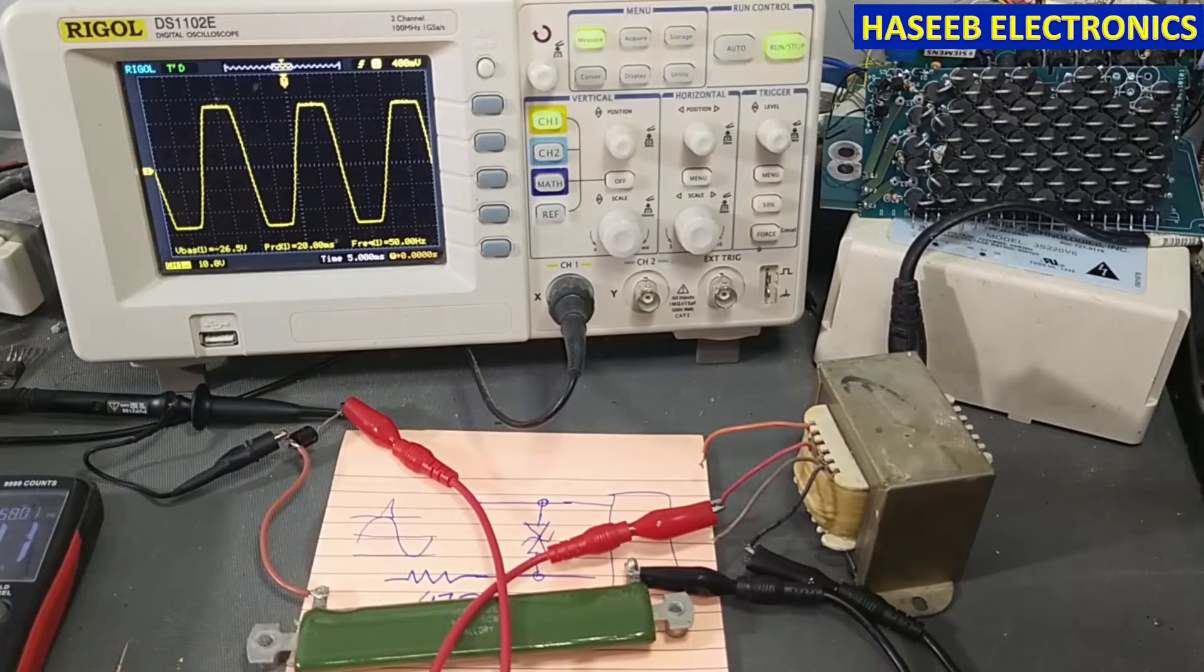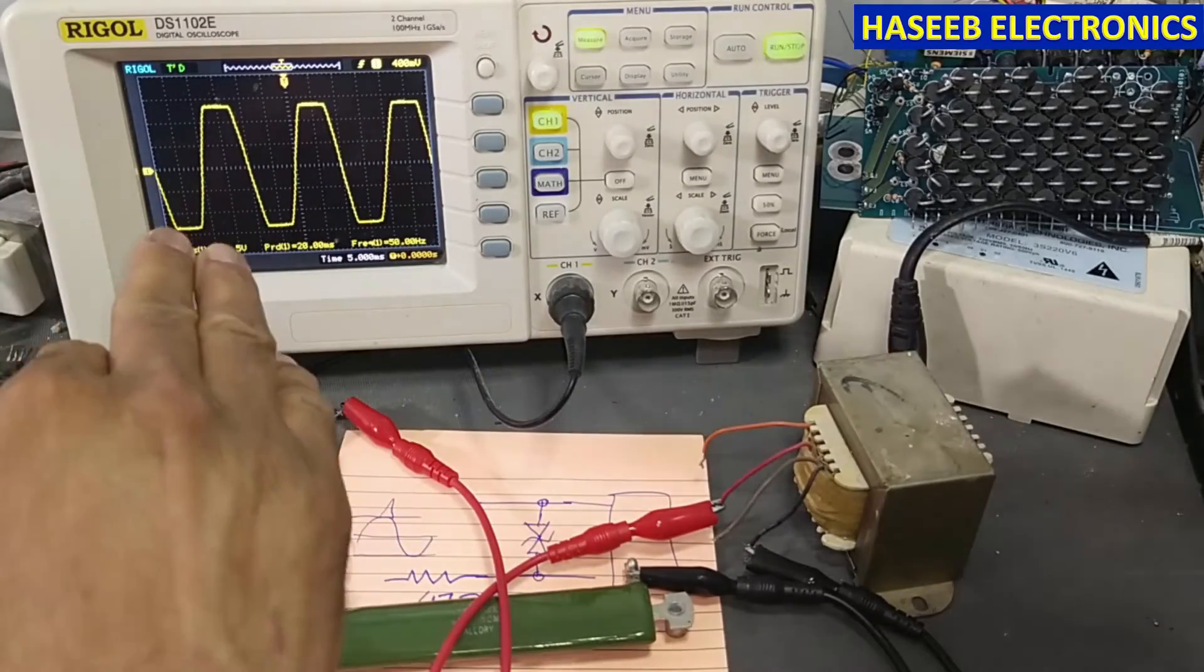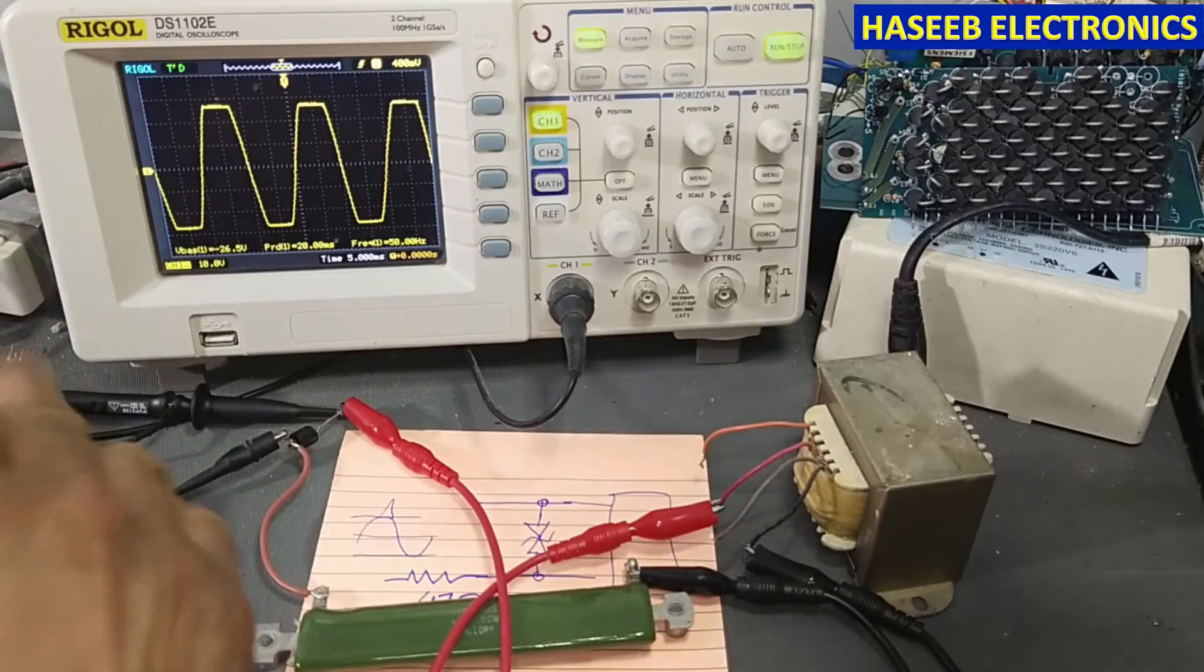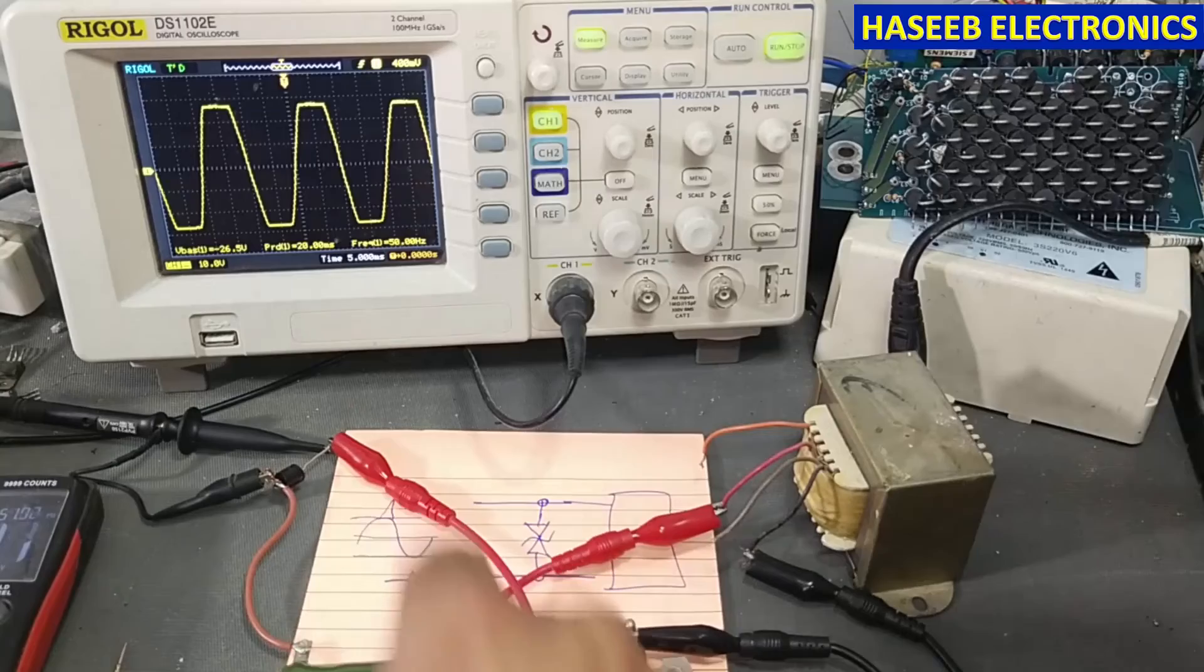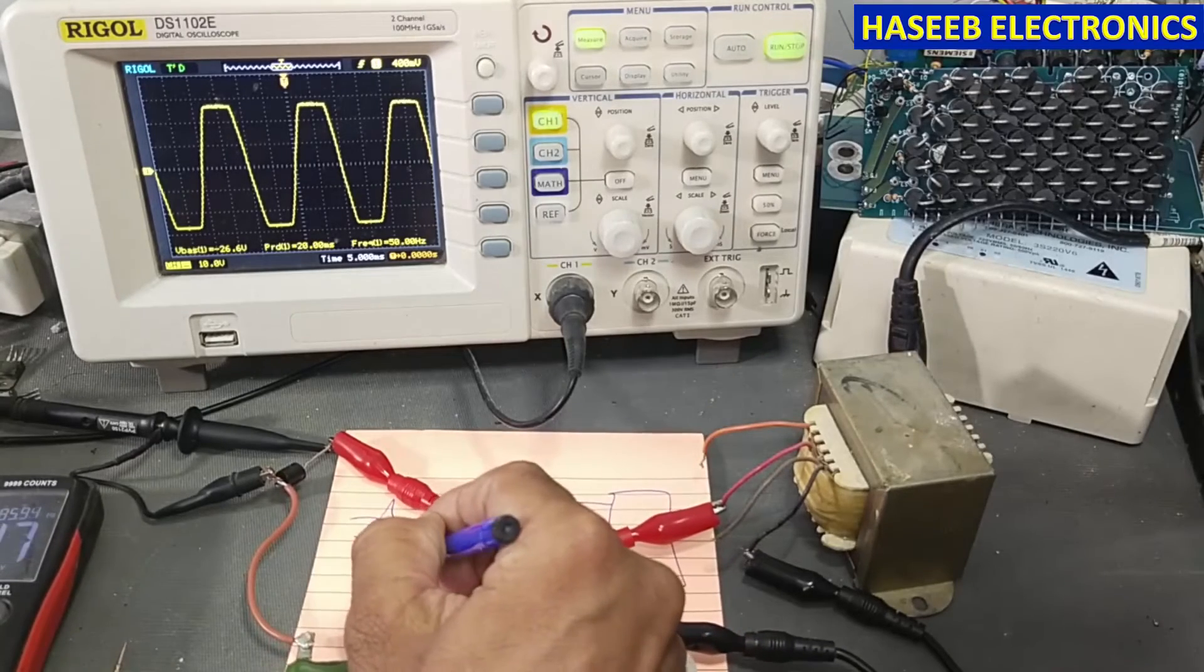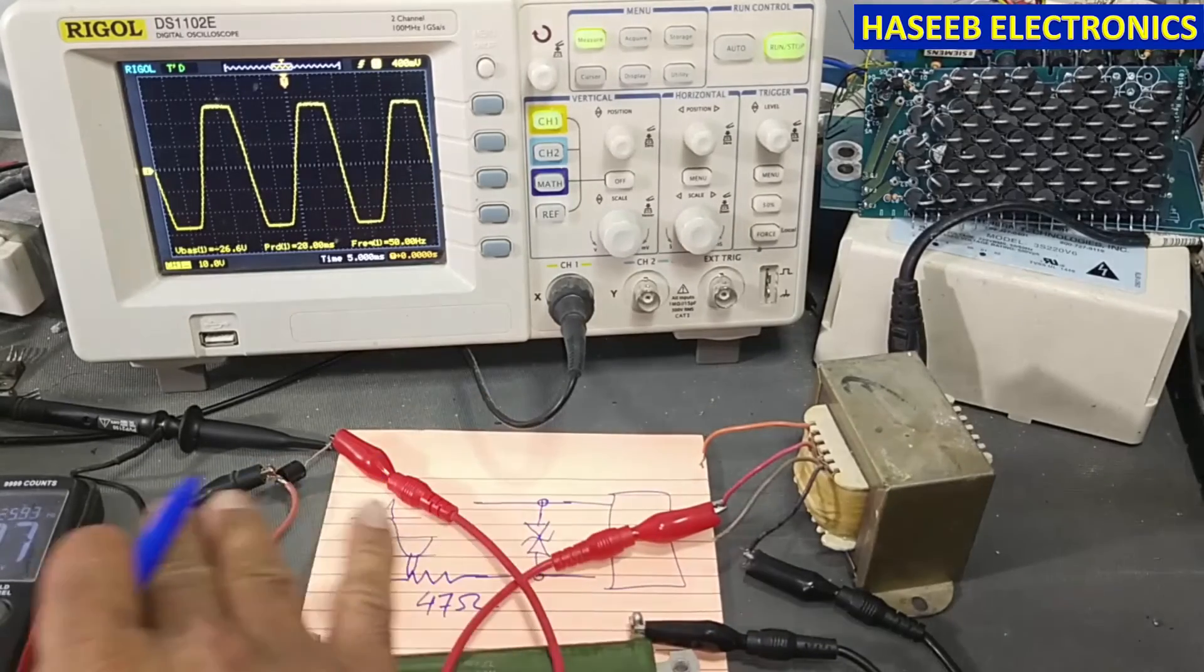So in this way we can verify the function of the TVS. It is a bidirectional TVS. It is clipping from the positive side and negative side. As we discussed, if any signal is from positive peak or negative peak, it will clip off.